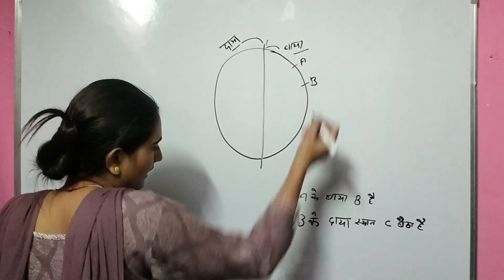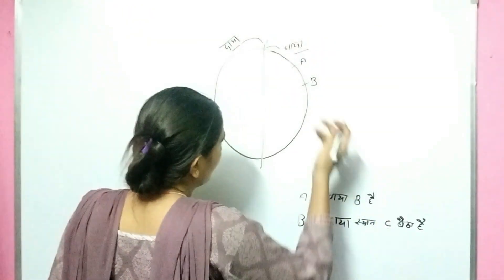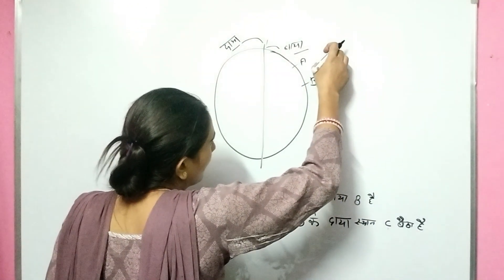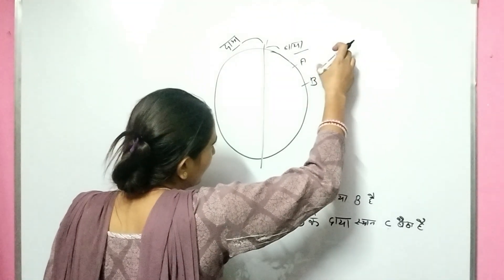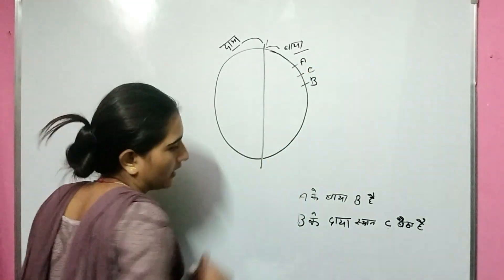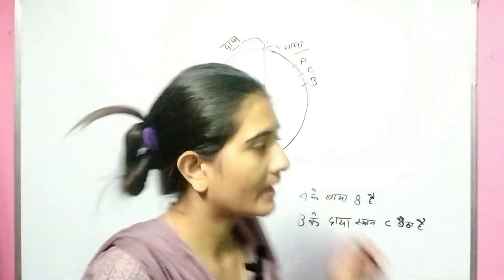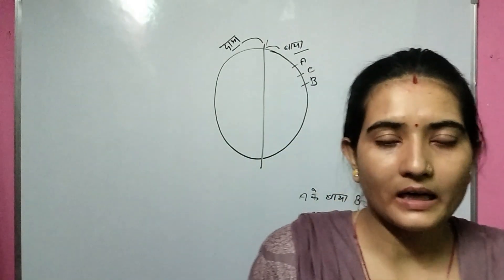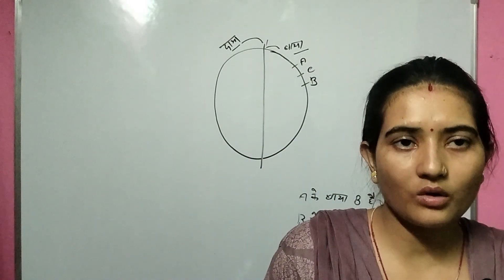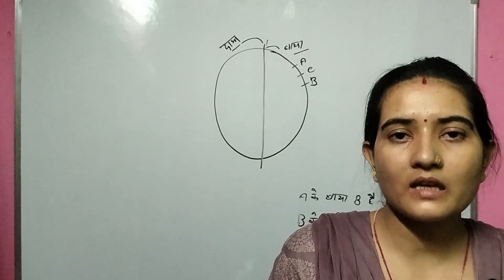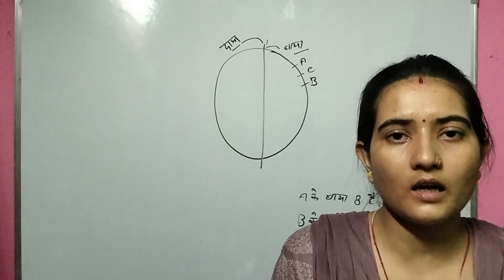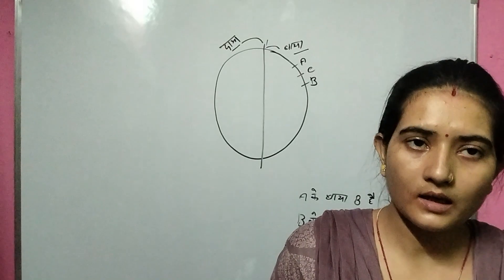So B is B, then A is B and B is B. So who is sitting here? C is sitting here. In this way we will arrange positions. Two questions on this topic are 100% in each exam paper.